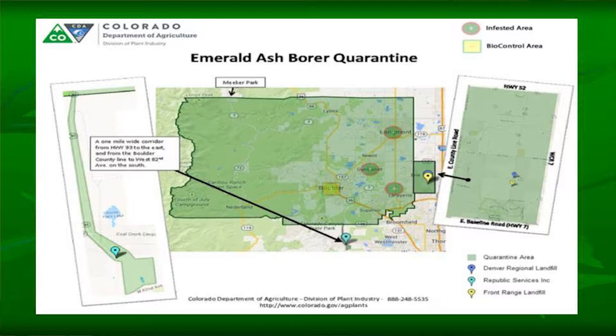The quarantine area includes all of Erie. Originally the quarantine boundary ran down County Line Road, but we worked with officials and asked them to include the entire town, because it didn't make sense to have half the urban forest we manage quarantined and the other half not. It made sense for management purposes.